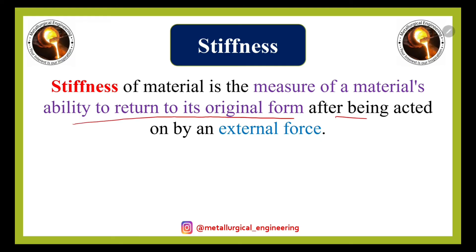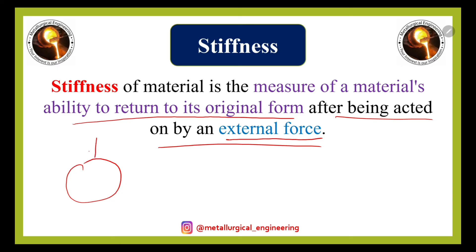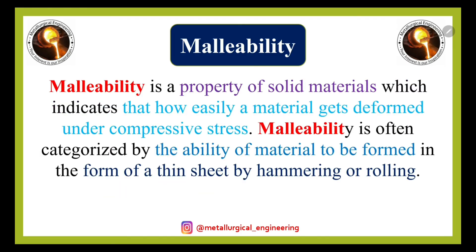Another important term is stiffness. Stiffness is the measure of a material's ability to return to its original form after being acted on by an external force. For example, suppose this is a ball — when we apply a force to it, the material tries to take a compressed shape. When we remove the load, it returns to its original shape. The amount of force required to produce that deformation is measured and defined as stiffness.